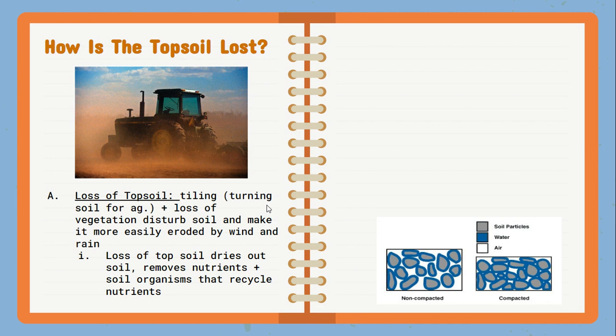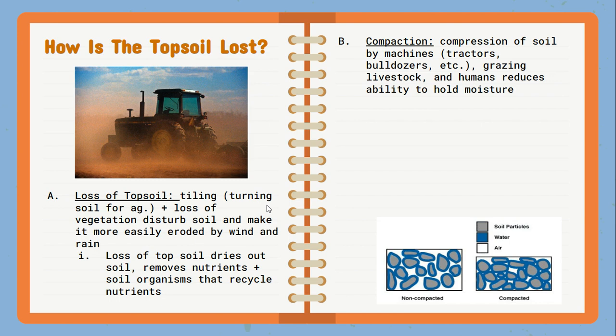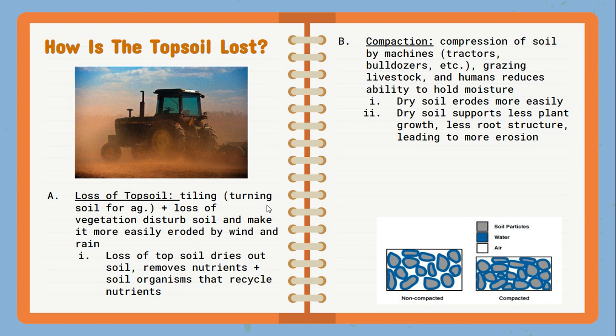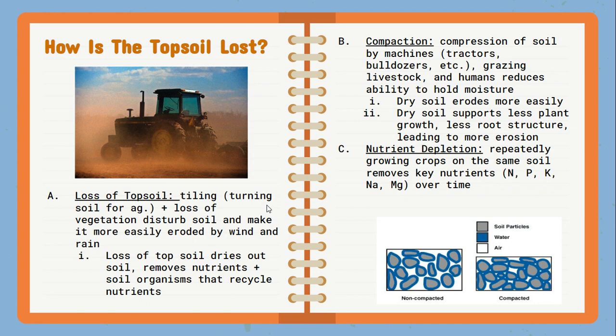We can also see compaction. When we're using very heavy machinery or putting livestock on an agricultural field, that's going to create compression, which reduces the soil's ability to hold any moisture and causes greater amounts of soil erosion. With greater soil erosion, we can support fewer plants and less root structure, creating a positive feedback loop of more erosion and fewer plants. Overall nutrient depletion occurs when we plant the same crops over and over, depleting the soil of specific nutrients every single time, reducing the soil's ability to grow any future crops.